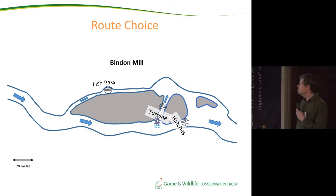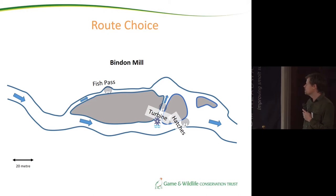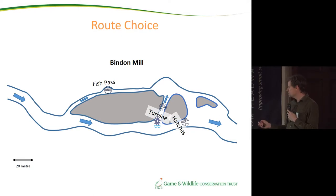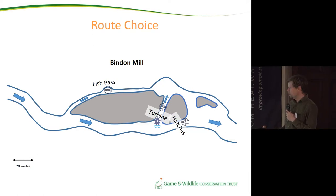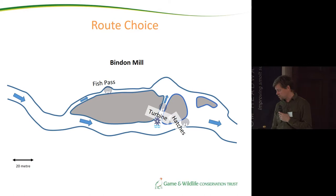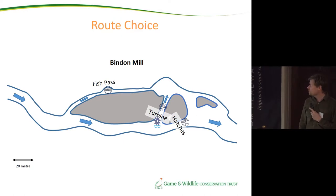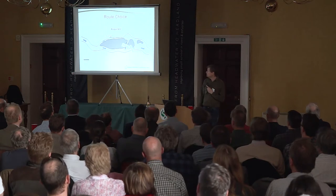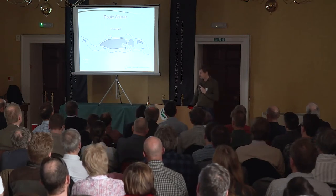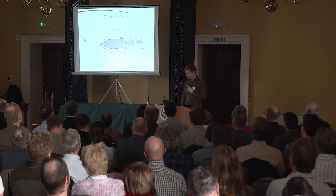Schematically, the turbine at Binden Mill has flow coming from left to right with three routes fish can take: the main hatches — which take the majority of the flow — the turbine entrance, and a fish pass. We established a partnership with the Environment Agency, who helped fund PIT tag antennae on all three routes, so we can now track which individuals use which route and look at their fate as they reach East Stoke.